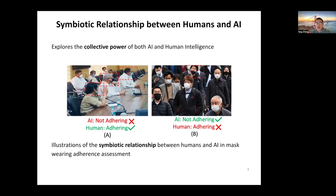In this case, the AI model can make an accurate estimation by analyzing details that humans may overlook. Therefore, the AI model can direct human intelligence to pay attention to those individuals and improve the accuracy of human label quality.